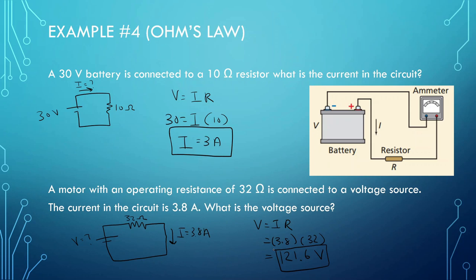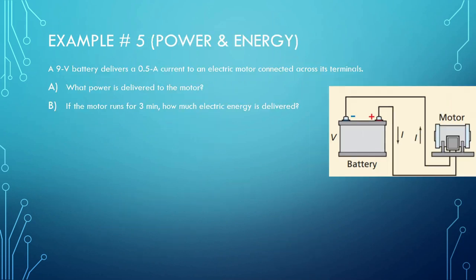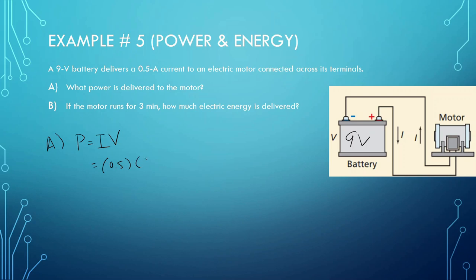I'm sure you guys are getting the hang of this now. These are kind of more simple problems. Now this one is a little bit different — it has to do with power and energy. We have a 9-volt battery delivering a current of 0.5 amps connected to a motor. What is the power delivered to the motor? Power is equal to the current times the voltage: 0.5 times 9 gives us a power of 4.5 watts.